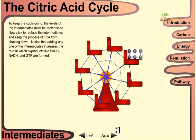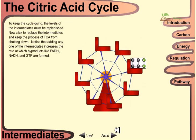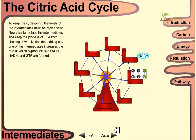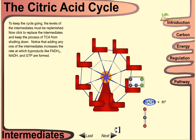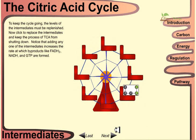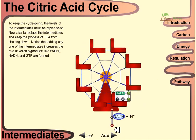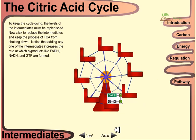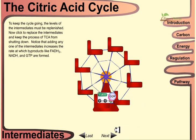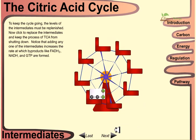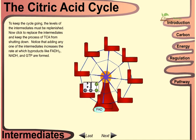To keep the cycle going, the level of intermediates must be replenished. Intermediates need to be replaced to prevent the TCA cycle from shutting down.